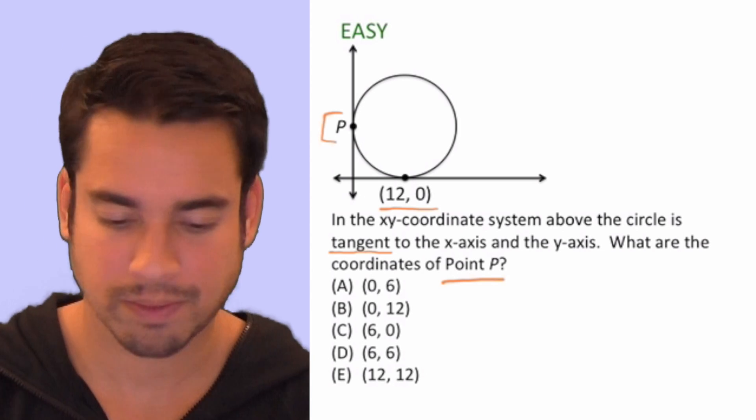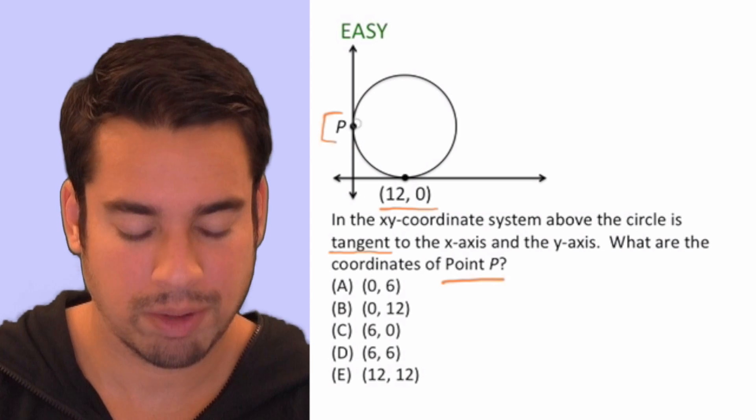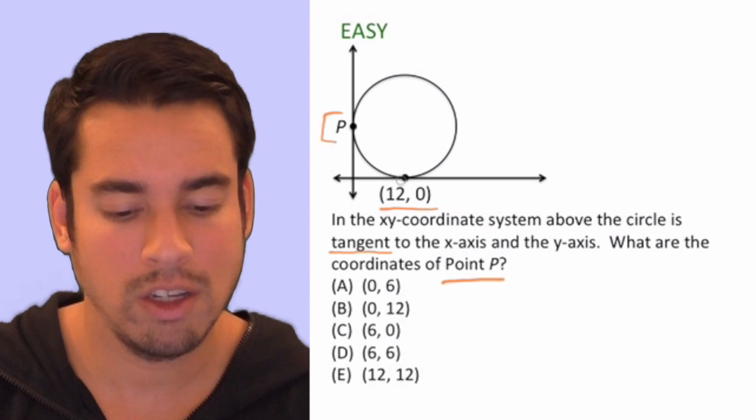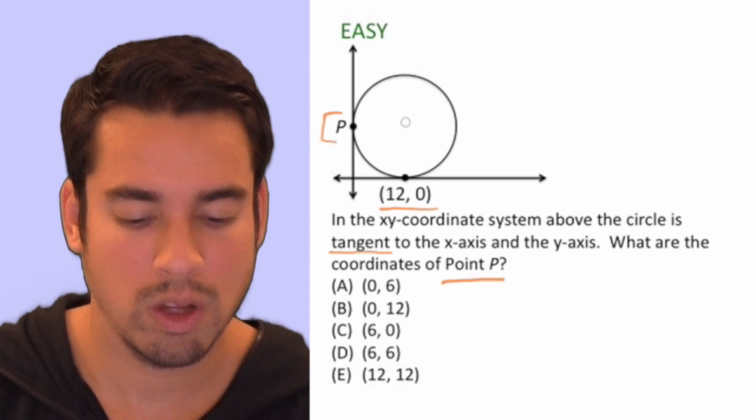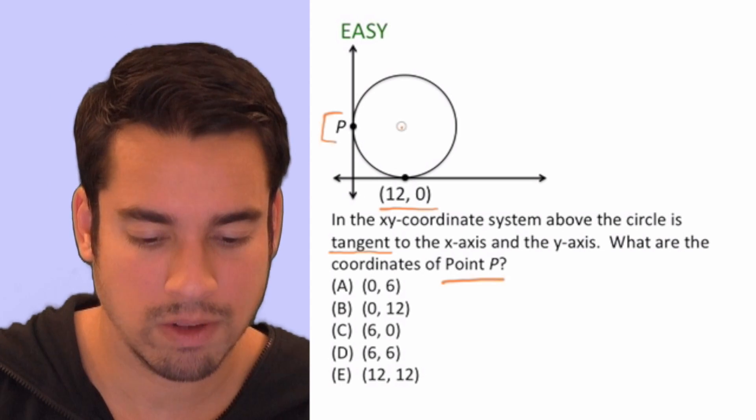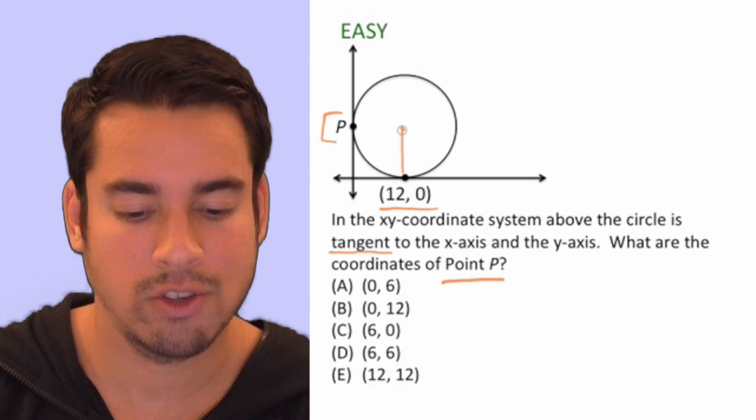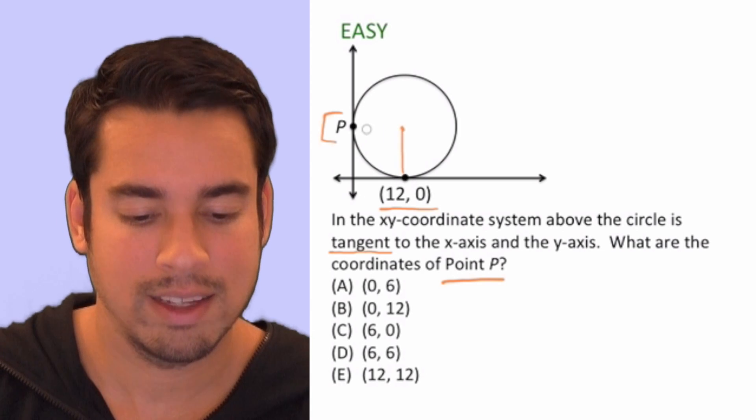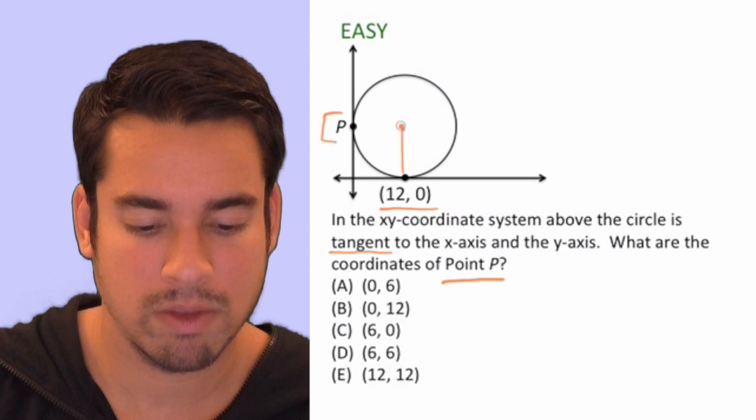All right, so now we say what are the coordinates of point P. What's interesting to note here is since it's tangent, what that tells us is from the center straight down—that's a radius that I just drew by the way—from the center straight down is the same length as from this point.